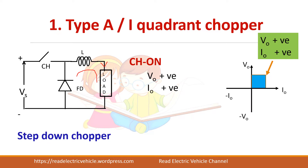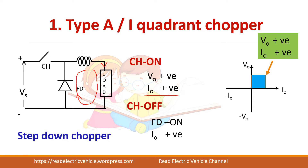When the switch is off, the current freewheels through the diode. In this case, output voltage will be zero but I-naught remains in the same positive direction. So in both cases, voltage is either positive or zero and I-naught is positive. This chopper is therefore called a first quadrant chopper, or Type A chopper.